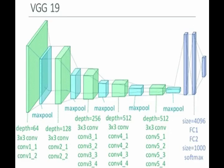VGG19 was created by the Visual Geometry Group from Oxford University. VGG19 consists of 19 layers with trainable weights. I tried different optimizers like RMSProp and Adam; among them, Adam optimizer gave the best results. The training accuracy for this model is 0.996 and the testing accuracy is 0.996.